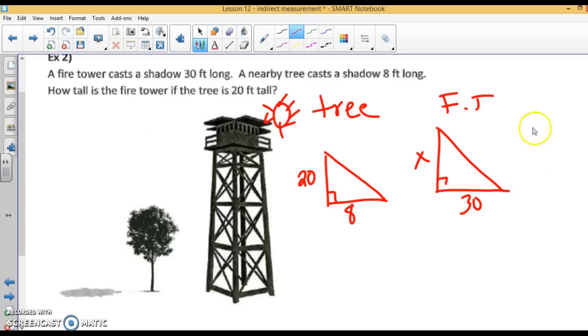Let's set up a proportion, height over shadow. We'll have 20 over 8 for the tree, height over shadow, equals x over 30. Height over shadow. Cross-multiply. 8x equals 600. Divide both sides by 8. x is 75 feet.